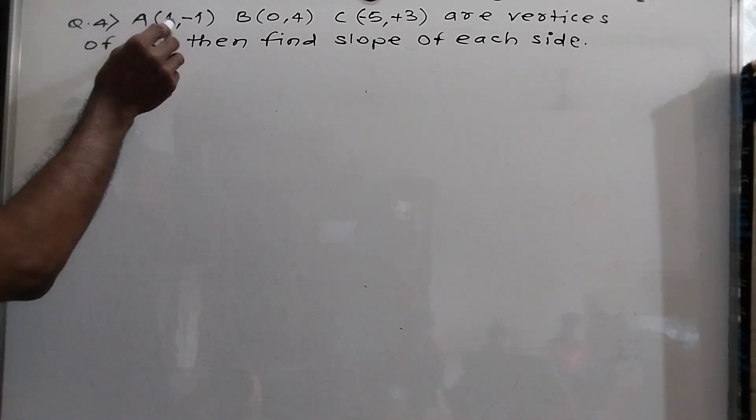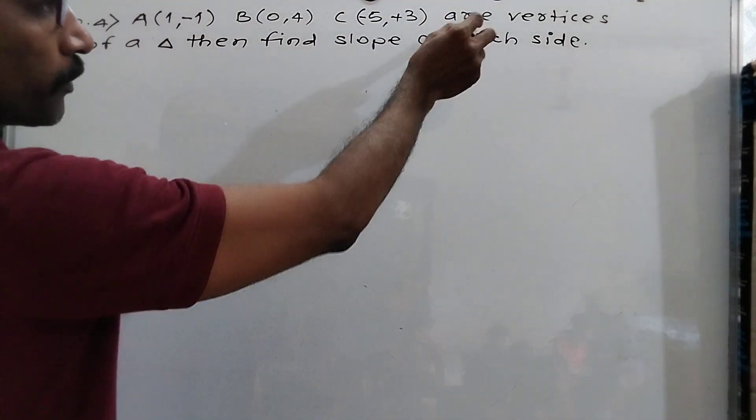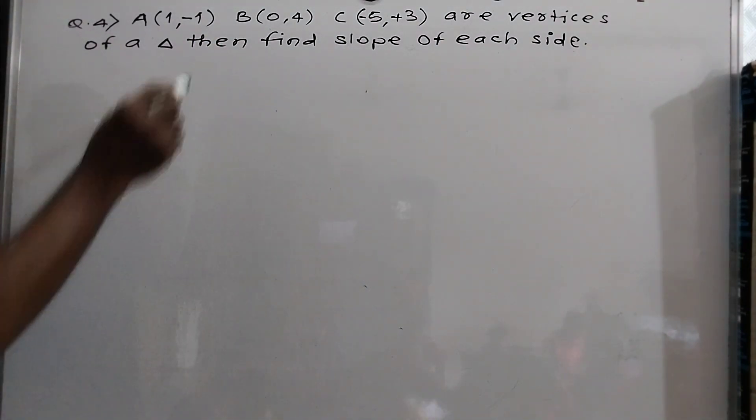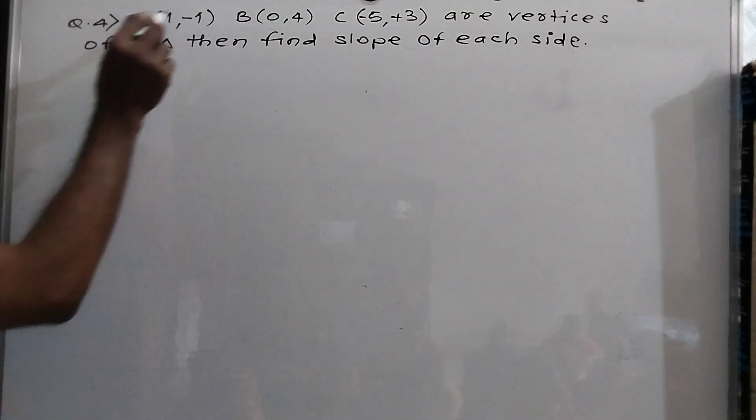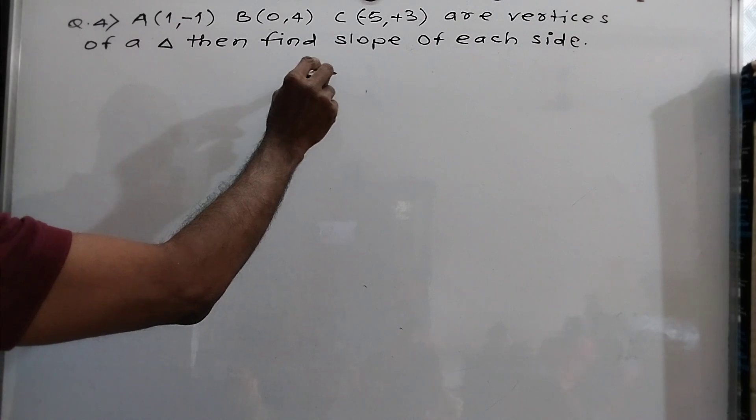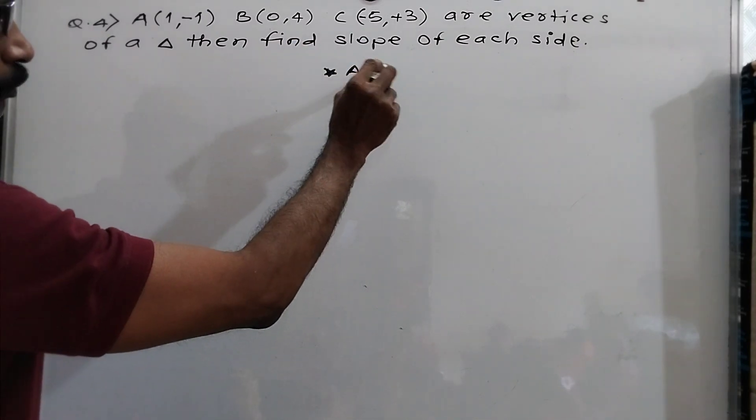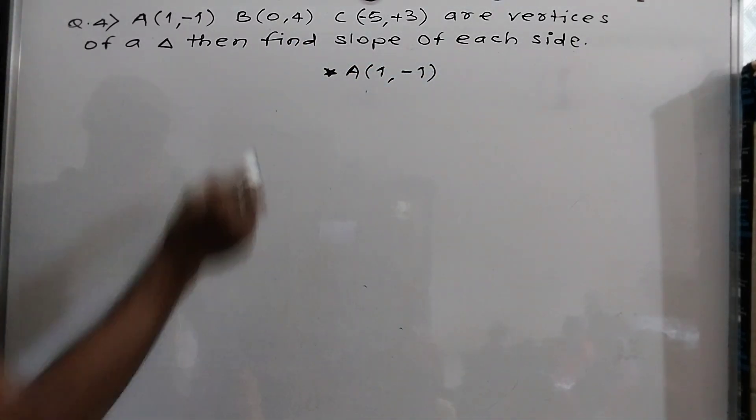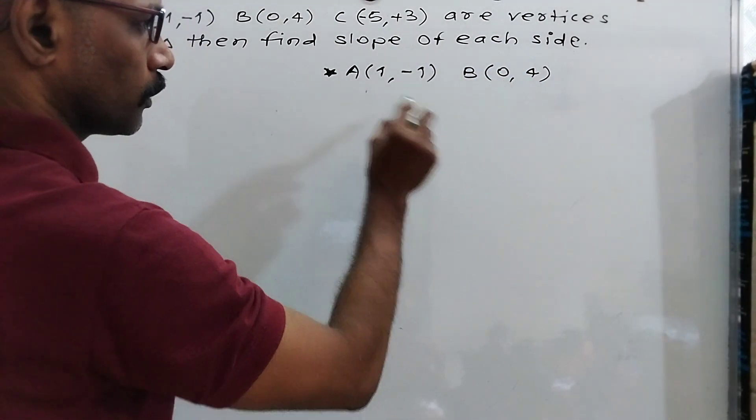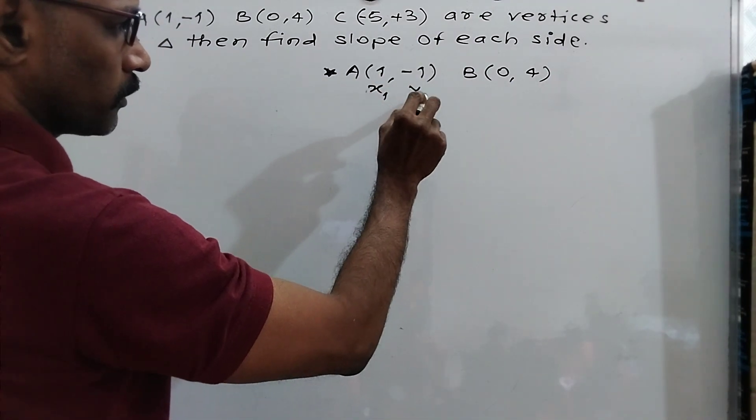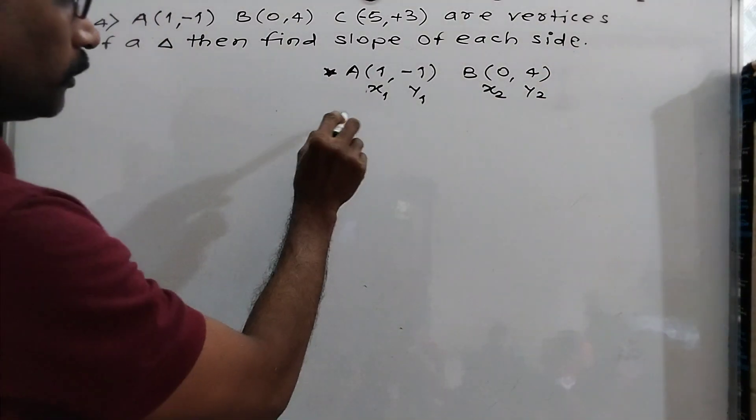Series question number 4: A(1,-1), B(0,4), C(-5,3) are vertices of a triangle, then find slope of each side. Now first we take here A and B. A is 1 comma minus 1 and B is 0 comma 4, then this is x1, y1, x2, y2.